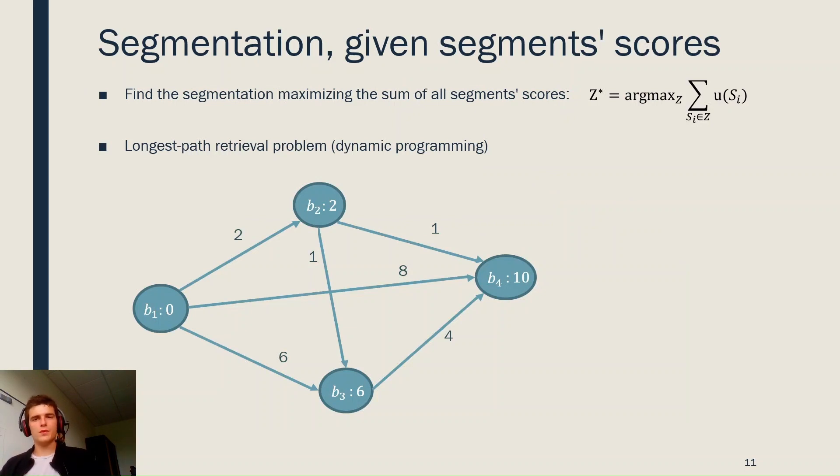Now, given all segment scores, the segmentation is found as the segmentation which maximizes the sum of all segment scores. This is framed as the longest-path retrieval problem in a graph, and is solved by dynamic programming.